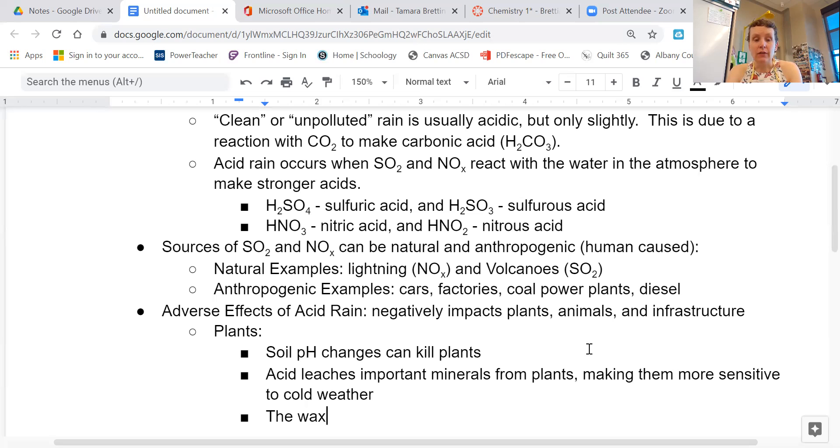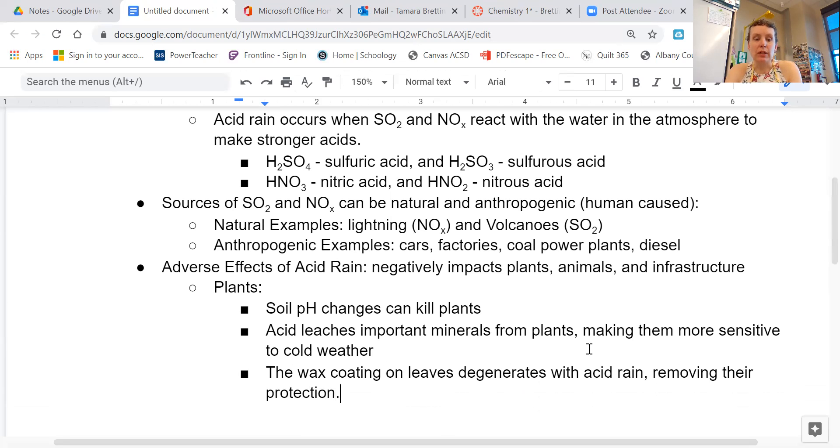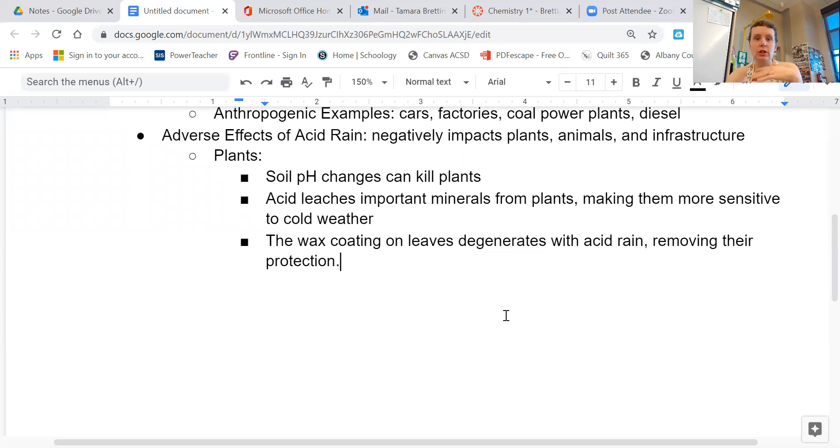The wax coating, if you've ever looked at a leaf really carefully, it has a waxy surface to it. The wax coating on leaves degenerates with acid rain, removing their protection. That waxy coating actually protects those leaves from the sun. Ultraviolet rays can give us a sunburn. A plant can sort of experience the same thing. The sun can actually damage the leaf tissue if that wax coating is not there. And so acid rain can just dissolve that wax coating right off of the leaf. So that's a few examples of how acid rain can affect plants in an adverse way.